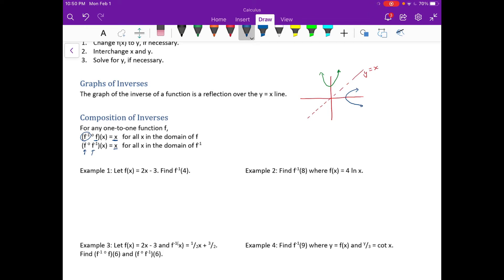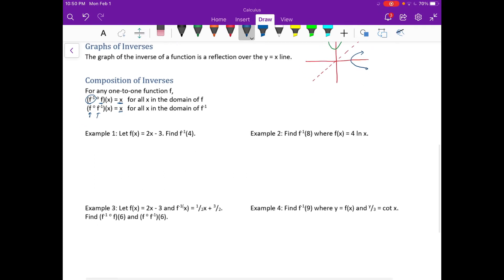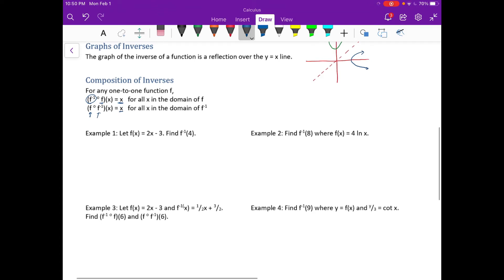So I have a few examples here. We're going to do a couple of these things. It says, example, let f of x equals 2x minus 3. Find the inverse of f at 4. So what we can do is we can realize that this is a line, so the inverse will be a function.